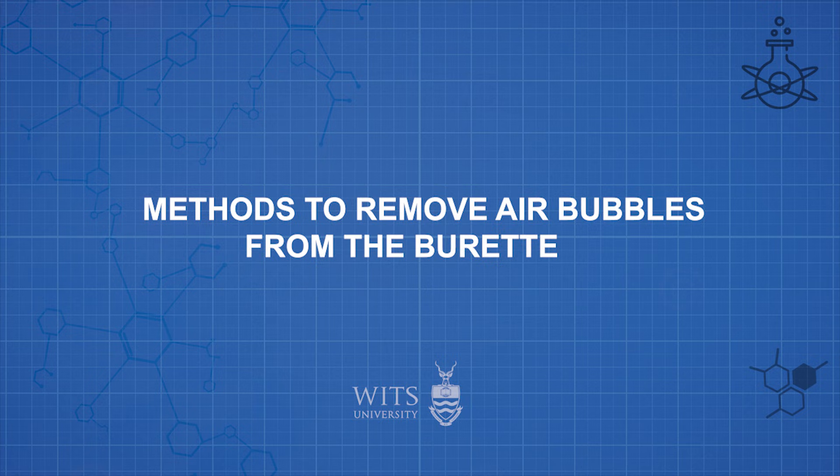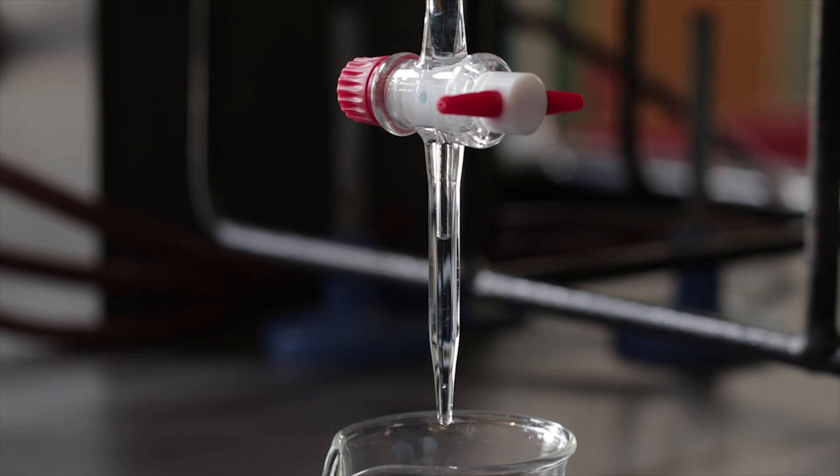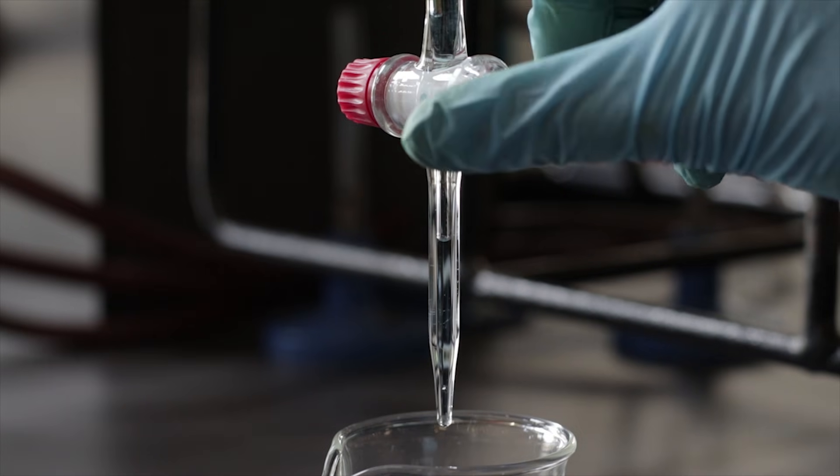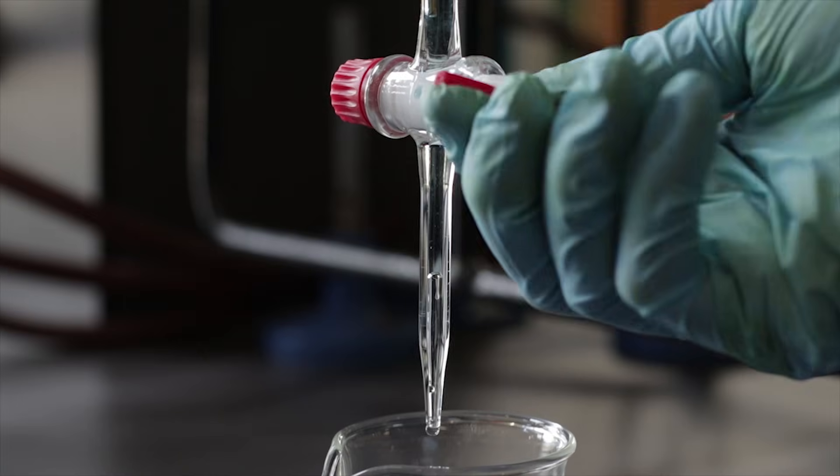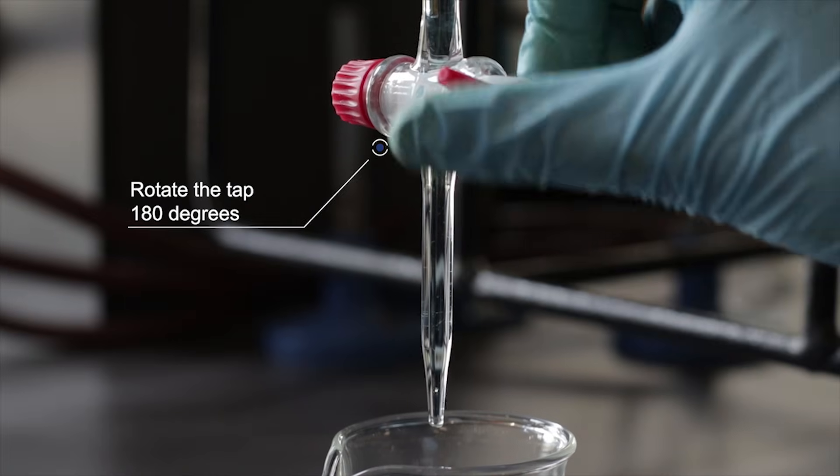If there are any bubbles in the burette there are three methods that can be used to remove any bubbles. The first method is to try to turn the tap on and off quickly rotating the tap 180 degrees.